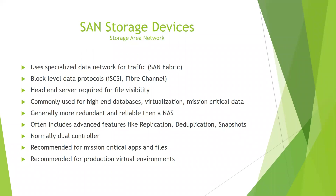A DAS uses external SAS, and iSCSI is basically external SAS over Ethernet. So a SAN is block-level only; it's not going to be aware of the files on it, only the block-level data. You need a server to be able to see the actual files stored on a SAN device. SANs are commonly used for high-end databases, virtualization, and mission-critical data.